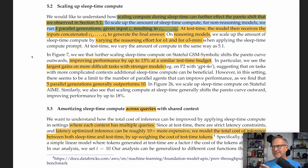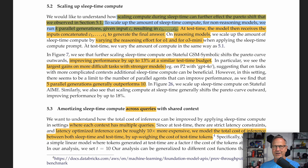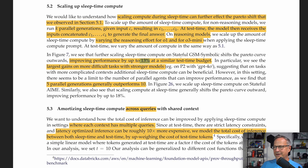They also look at scaling up compute — not just giving sleep time compute the same amount as test time compute, but giving it more, allowing it to think even harder. Basically, instead of just one new context, they generate five or ten — K new contexts — and throw all of that into the mix, providing even more information. That produces a 13% accuracy increase for GSM Symbolic and an 18% accuracy increase for AIME, which is again significant.